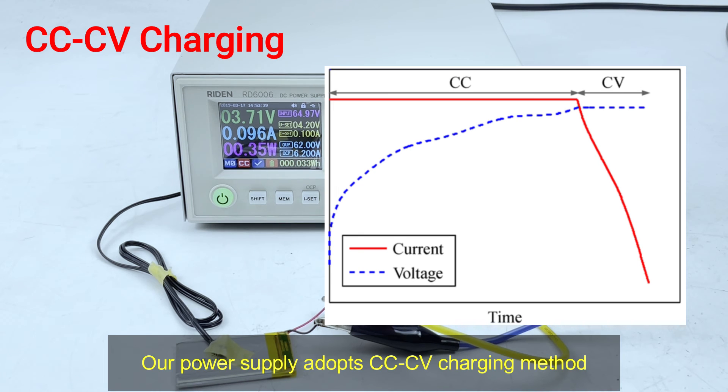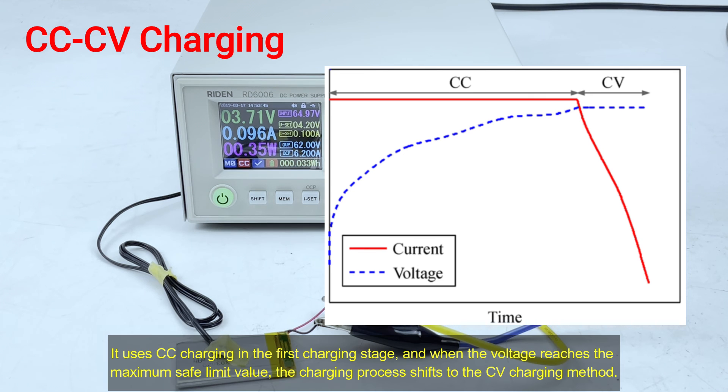Our power supply adopts constant current constant voltage charging method. It uses constant current charging in the first charging stage. And when the voltage reaches the peak voltage, the charging process shifts to the constant voltage charging.